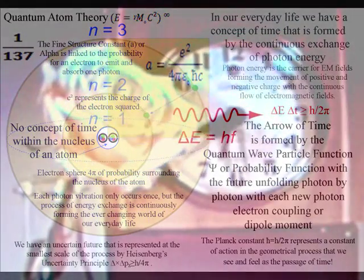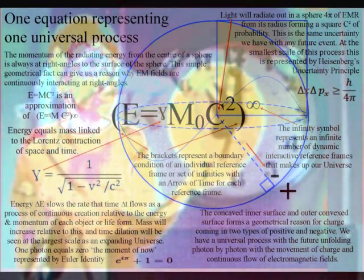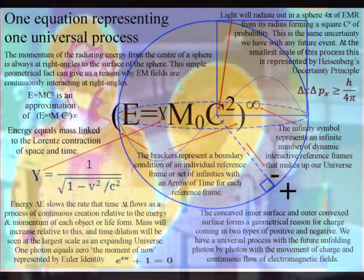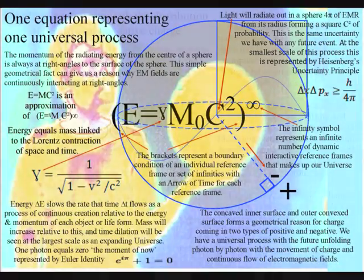This theory explains the universe as a continuum based on a universal process of energy exchange between the atoms of the periodic table and the electromagnetic spectrum of light. Light is a wave over a period of time and only has particle characteristics when it interacts with the electron probability cloud that surrounds the atoms.